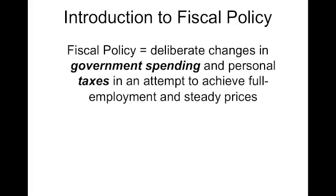The word fiscal is usually used in reference to budget. A budget — anybody's budget — has to do with a certain amount coming in, and where you're going to spend it: the balance between income and spending. For the government, their fiscal budget consists of tax revenue — the taxes that come in to them — and then where they're going to spend it.